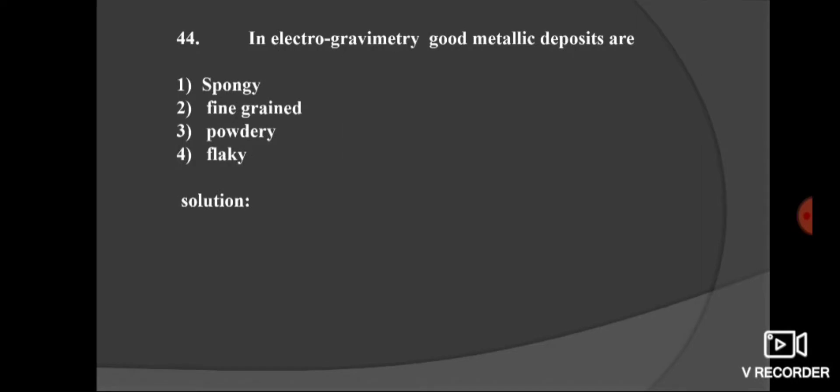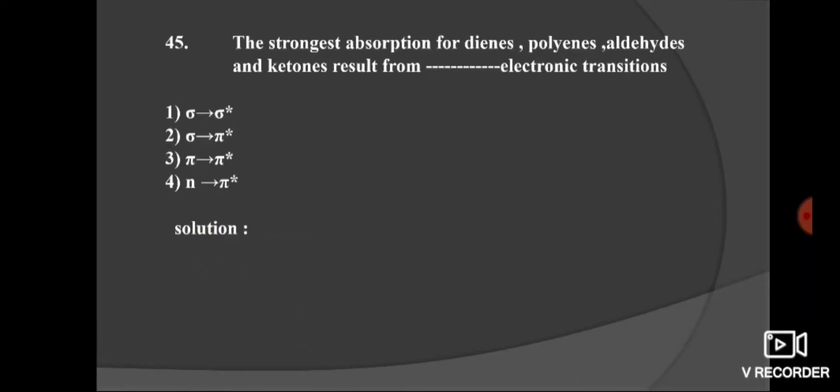Next question. In electrogravimetry, good metallic deposits are: 1, spongy; second, fine grained; option third, powdery; and 4, flaky. Here in electrogravimetry, good metallic deposits are always fine grained. Option 2 is the right option.